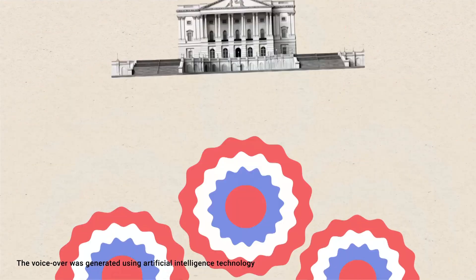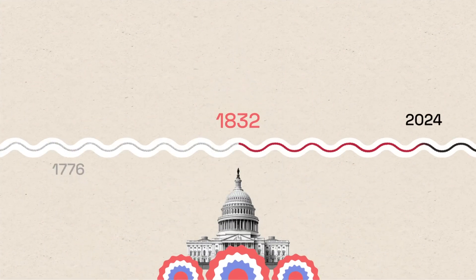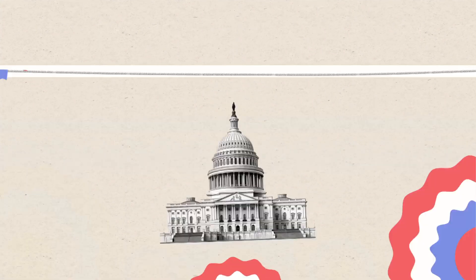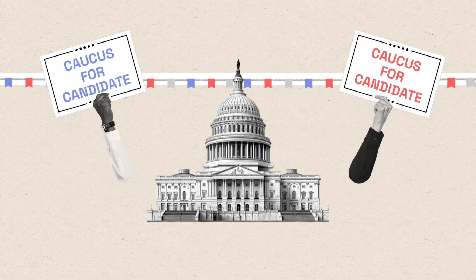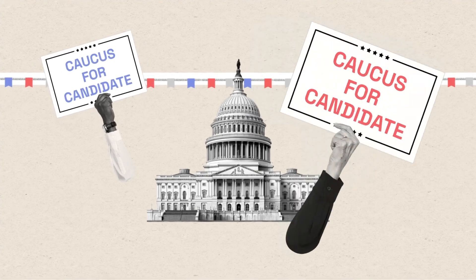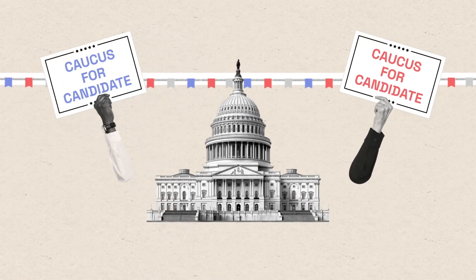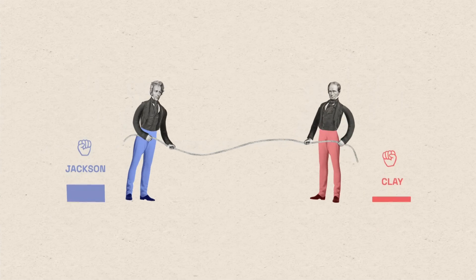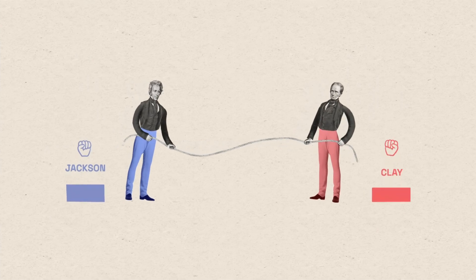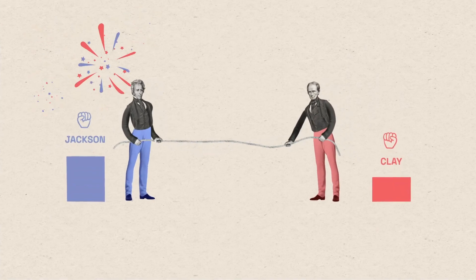Presidential nominating conventions do not date to the early days of the United States. Back then, political parties held caucuses, where small groups of party leaders chose the candidates. It wasn't until the 12th presidential election in 1832 that parties held conventions to select their candidates.